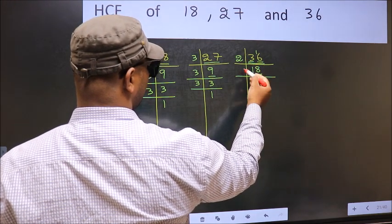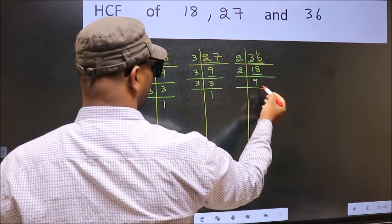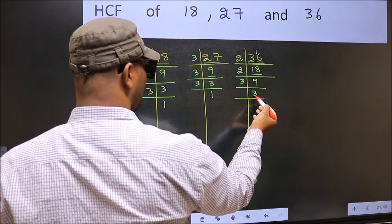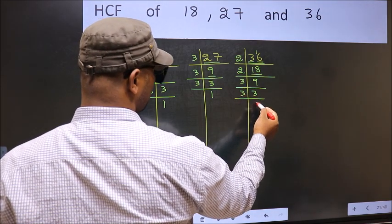Now 18. 18 is 2 times 9 equals 18. Now 9 is 3 times 3 equals 9. Now 3 is a prime number, so 3 times 1 equals 3.